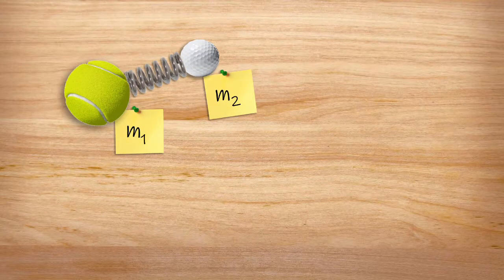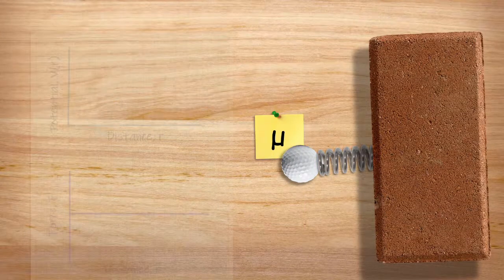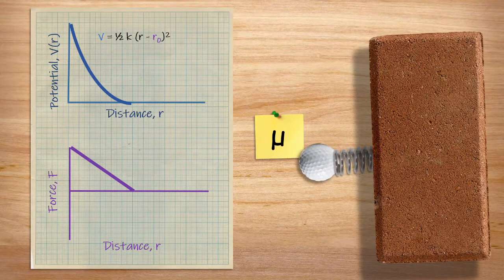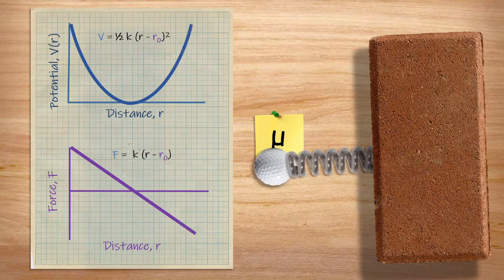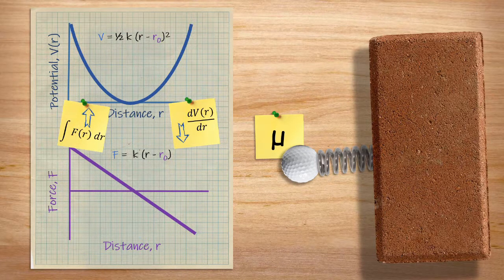Just like with rotations, we need to reach into our physics toolbox and dig out the reduced mass. This means that we can model two atoms vibrating against each other as just one mass vibrating against a fixed point. As the mass moves towards the fixed point, the potential energy increases and the restoring force increases. As it moves away, energy also increases and the restoring force also increases. It's also worth pointing out that force and energy are related by integrating and differentiating over distance. This is known as the harmonic oscillator, and the frequency associated with it is the harmonic frequency.